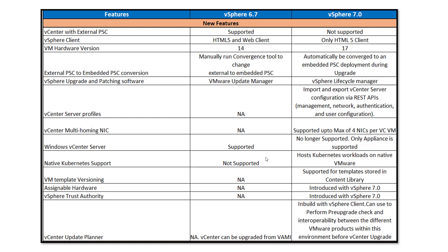Next is native Kubernetes support, which is not present in 6.7. With vSphere 7.0 we have vSphere with Kubernetes, so vSphere natively understands Kubernetes workloads. We can deploy pods and applications directly on ESXi hosts, create namespaces directly from vCenter Server, and the vCenter Server becomes aware of all native Kubernetes and Docker workloads.